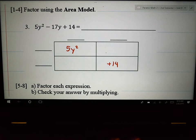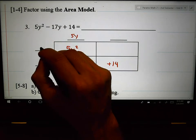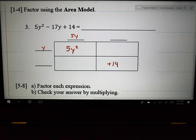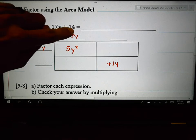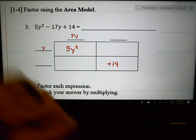And using this area model, you need to figure out what times what is going to be the 5y squared. There's only one way to make it. 5y times y is 5y squared. It doesn't matter if you put the 5y up here or down here. It could be in either spot at this point in time.